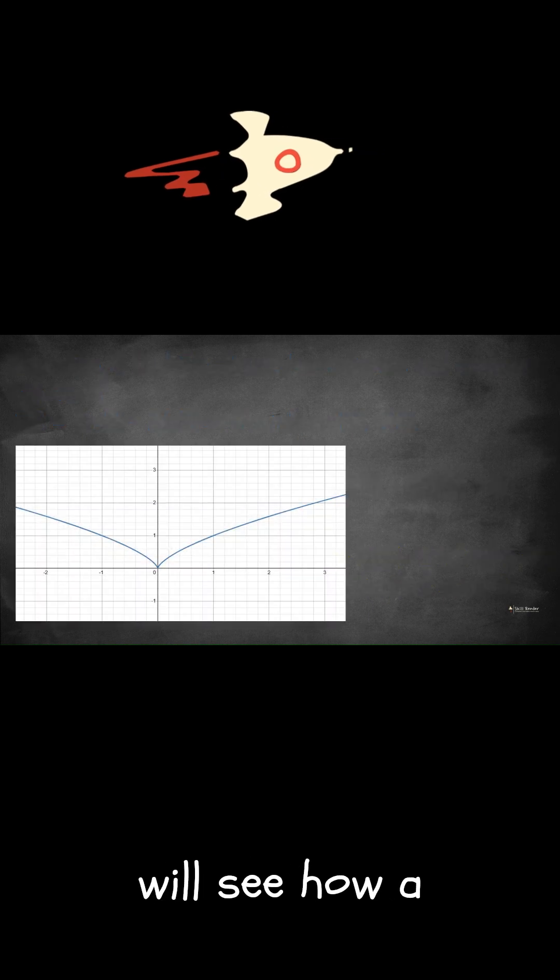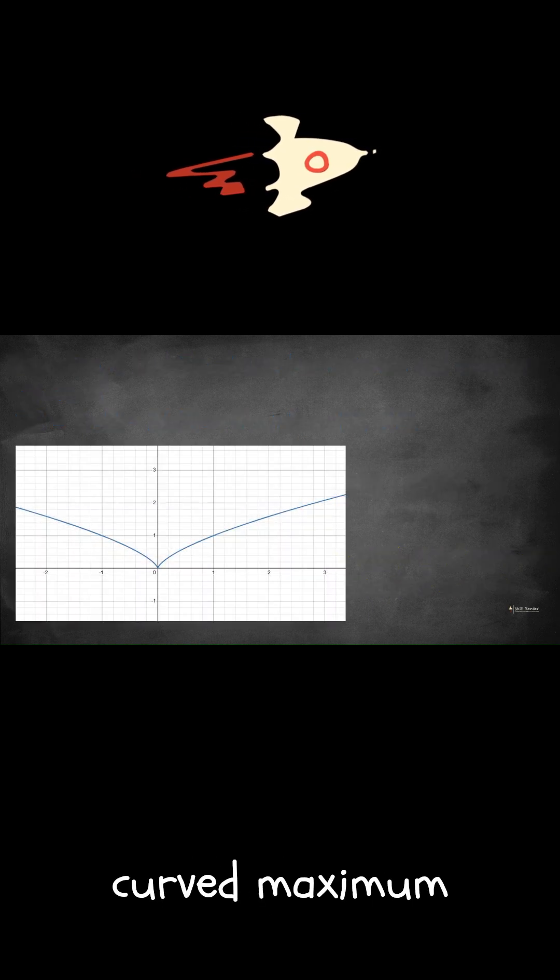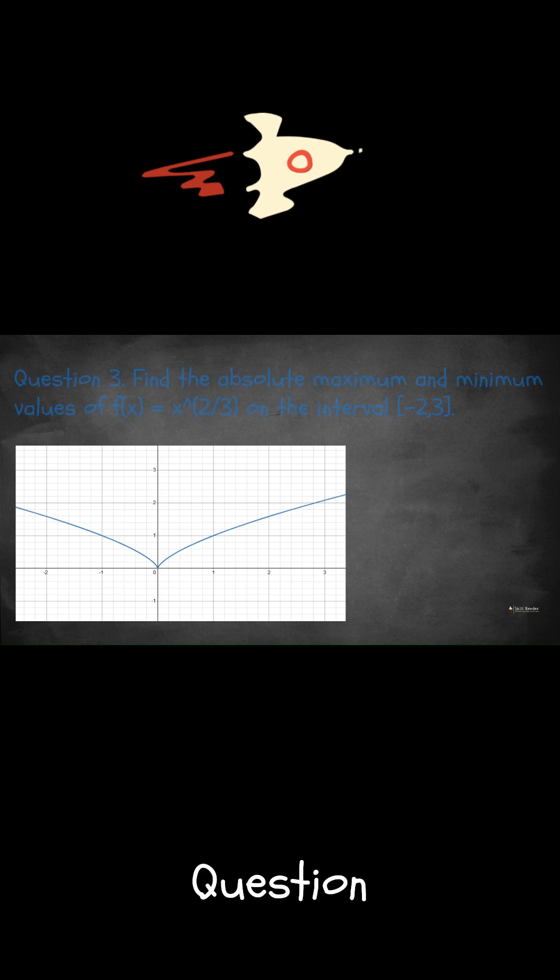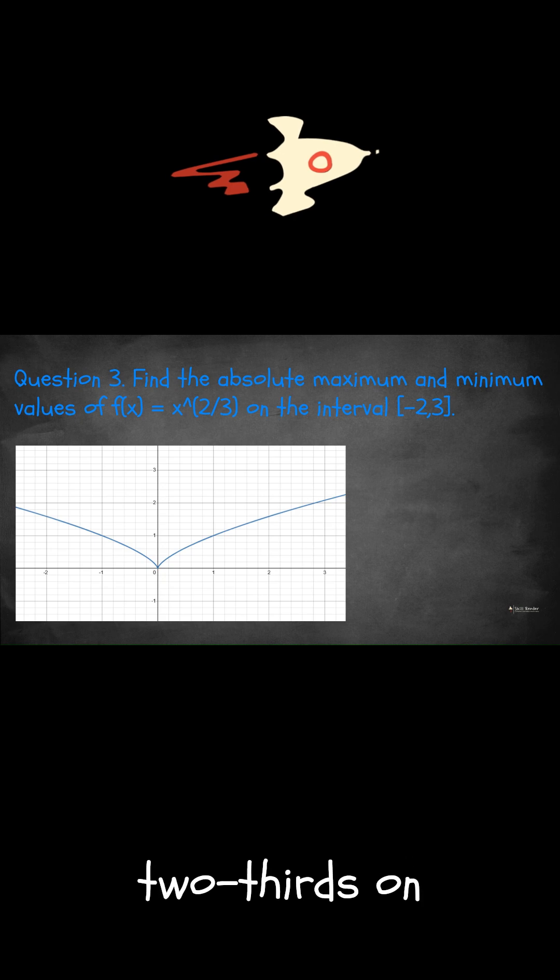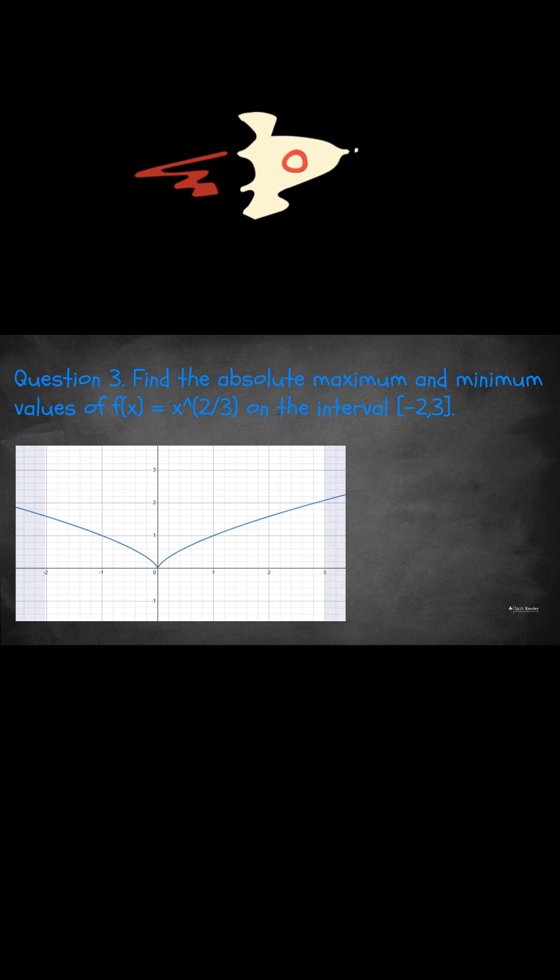In this last example, we will see how a vertex will differ from a curved maximum or minimum point. Question 3. Find the absolute maximum and minimum values of f of x equals x to the power of 2 thirds on the interval negative 2, 3.